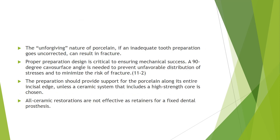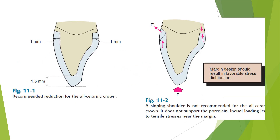By comparison, the proximal and lingual reductions are less conservative than those of a metal-ceramic crown. It has an unforgiving nature — if inadequate tooth preparation is done, it will fracture. Proper preparation design is critical to ensure mechanical success. A 90-degree cavosurface angle is needed to prevent unfavorable stress distribution and risk of fracture. The preparation should provide support for the porcelain along its entire incisal edge unless a ceramic system with a high-strength core is chosen. All-ceramic restoration is not effective as a retainer for a fixed dental prosthesis.